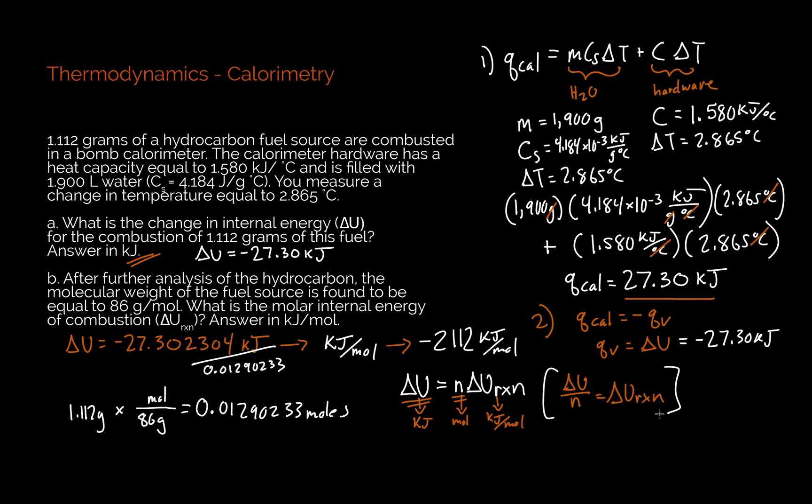Let's do a really quick recap of what we did here. We identified the two different components of this big calorimetry equation. We said we have to take into account the heat flow into the water and the heat flow into the hardware. We broke apart every single component and plugged it into the equation. We determined that we were solving for the heat flow into the surroundings, so we took the negative sign to get us to an answer.